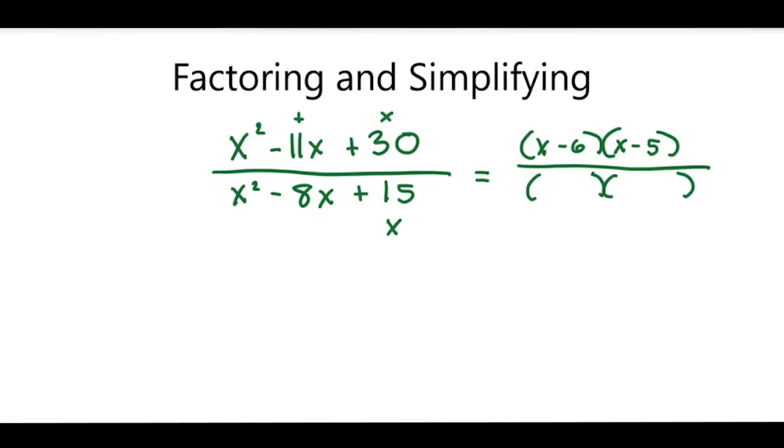Is there two numbers that will multiply together to be positive 15, but add together to be negative 8? Well, let's put our x's in the parenthesis. And two numbers that multiply together to be positive 15, but add together to be negative 8, are negative 3 and negative 5.